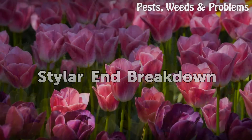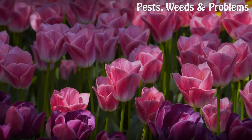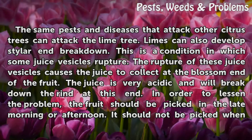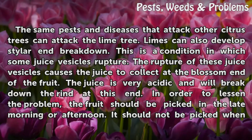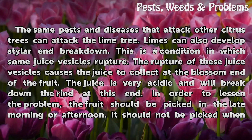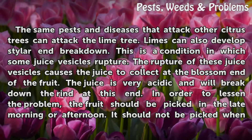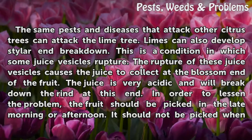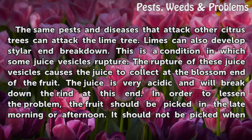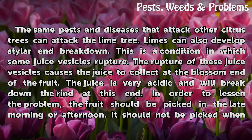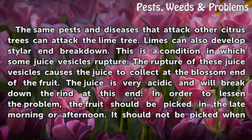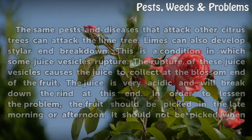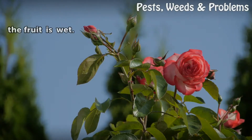Styler and Breakdown. The same pests and diseases that attack other citrus trees can attack the lime tree. Limes can also develop styler end breakdown. This is a condition in which some juice vesicles rupture. The rupture of these juice vesicles causes the juice to collect at the blossom end of the fruit. The juice is very acidic and will break down the rind at this end. In order to lessen the problem, the fruit should be picked in the late morning or afternoon, and should not be picked when the fruit is wet.